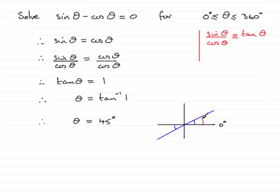The first value of theta is this one. And another value of theta starting from here. We turn all the way around to this line here. This is another possible value for theta.